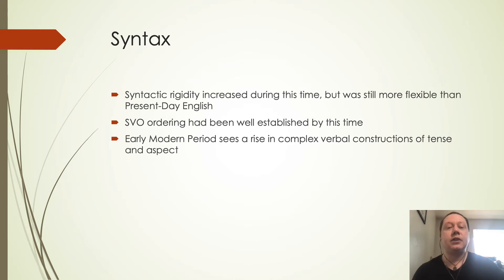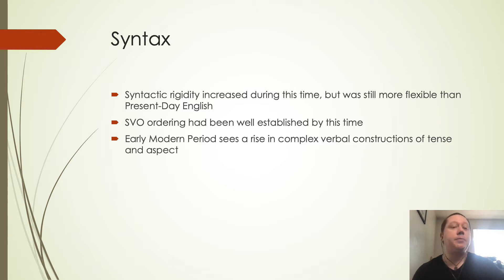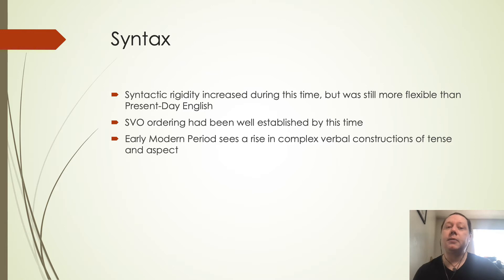Focusing on syntax first, we'll notice that syntactic rigidity is increasing during this time, continuing to increase toward what we see in present-day English, but it's still a little bit more flexible. SVO ordering has been well established by this time — it was already pretty well established in Middle English — and we start seeing a real rise in complex verbal constructions including tense and aspect, where things are turning into phrasal verbs and more complex constructions starting to emerge.